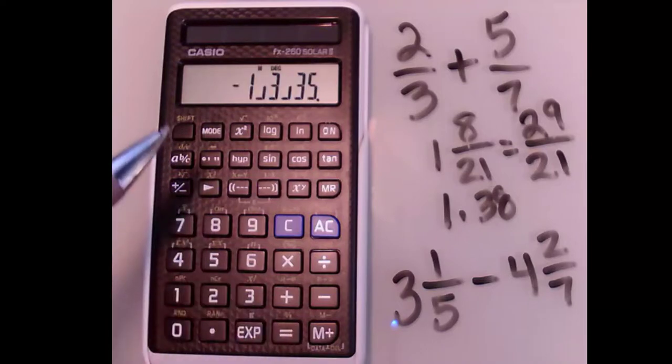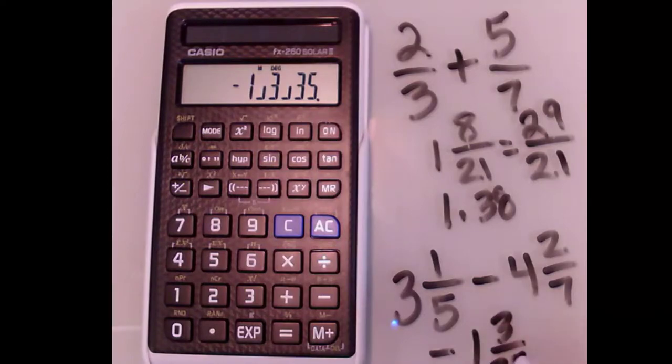When I hit equals, I should see my answer. Notice my answer is negative. The answer here is negative 1 and 3/35.